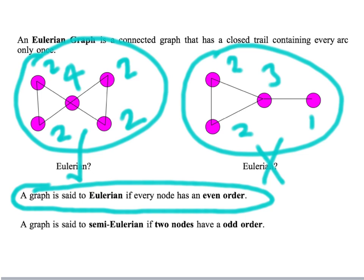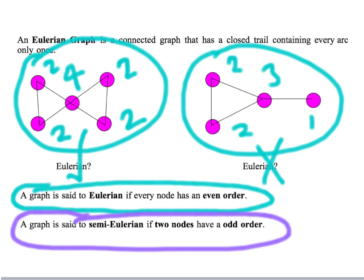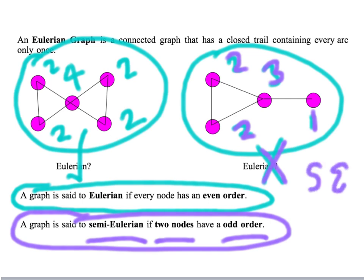Moving on, a second definition we need to learn is what makes a graph semi-Eulerian. The key thing about a semi-Eulerian graph is that there are exactly two nodes of odd order. Coming back to our earlier example, the node orders are one, one, three, two, two — so the graph is not Eulerian, but it is semi-Eulerian because there are exactly two nodes of odd order.